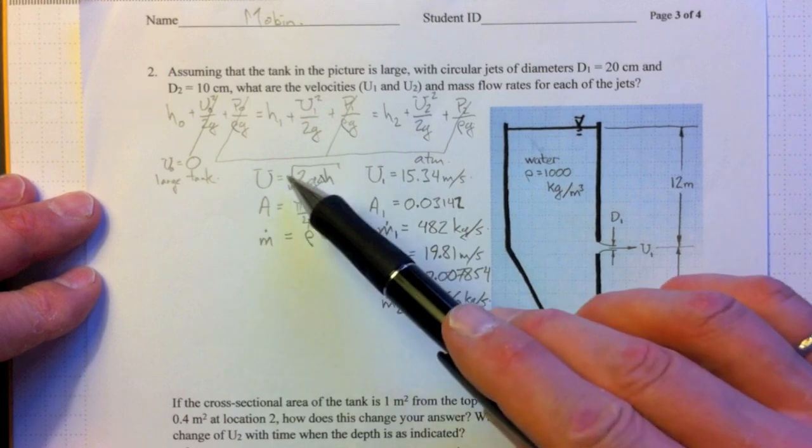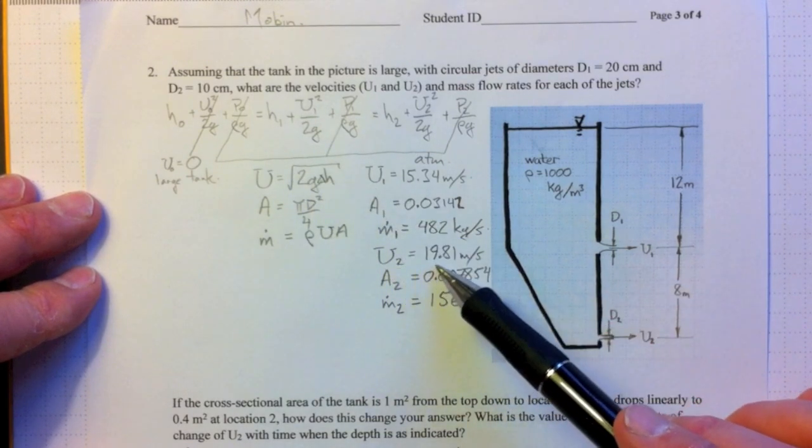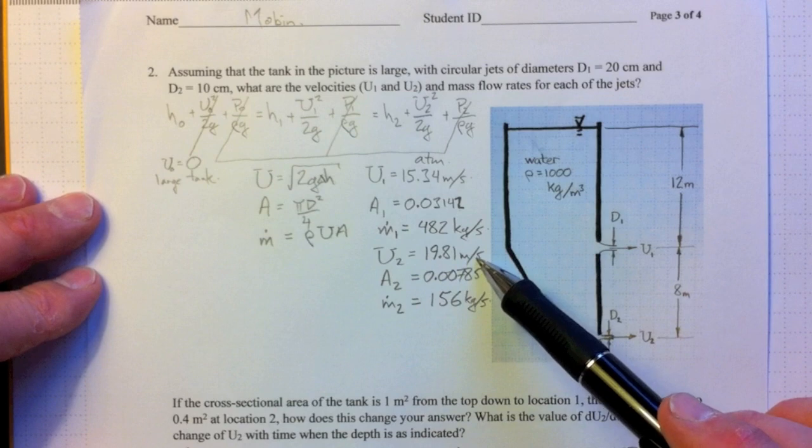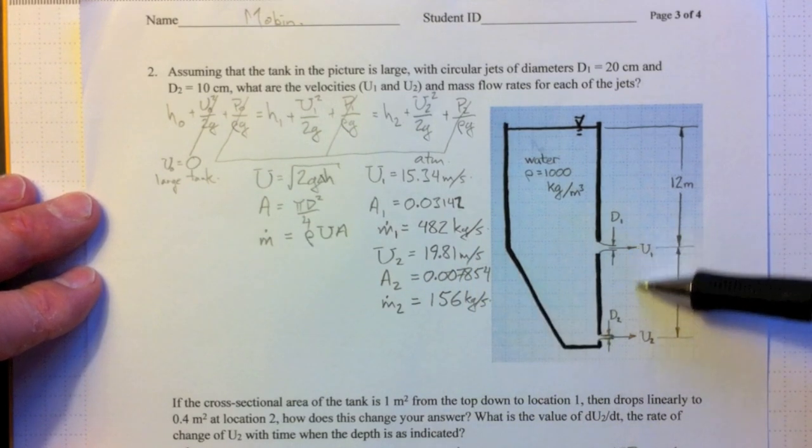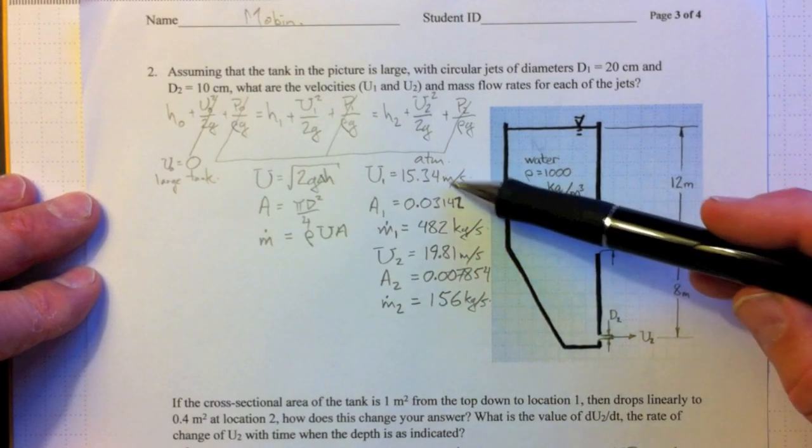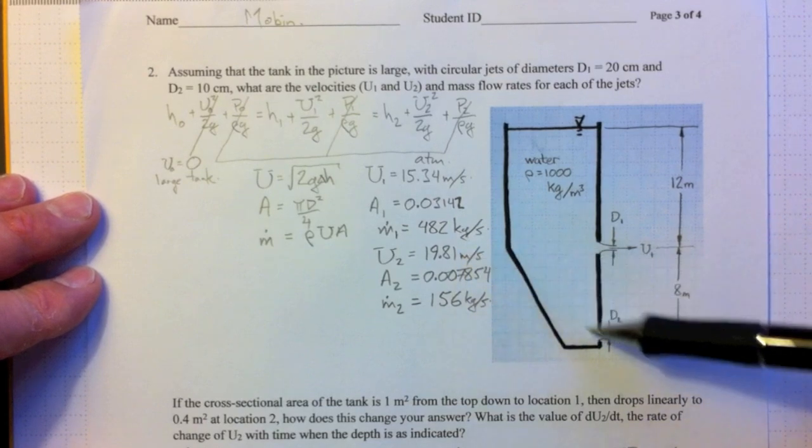Flow at 2, same equation. U2, 19.81 meters per second. So it's quite a bit further down, but the velocity is only a little bit higher. That's because of the V squared effect.